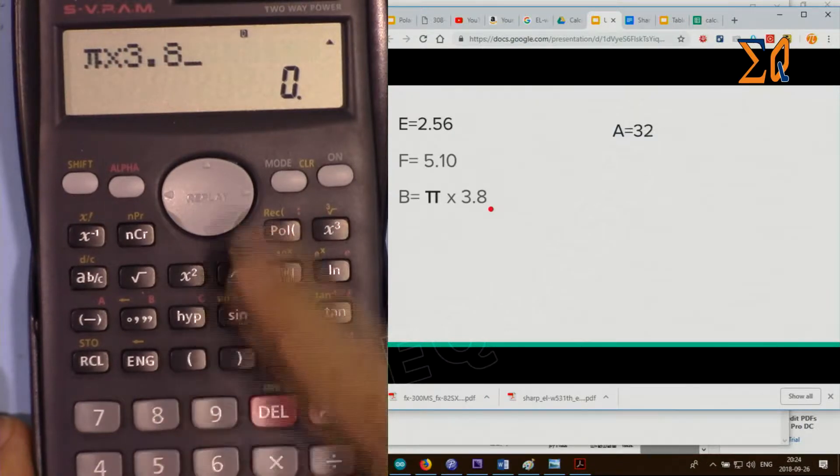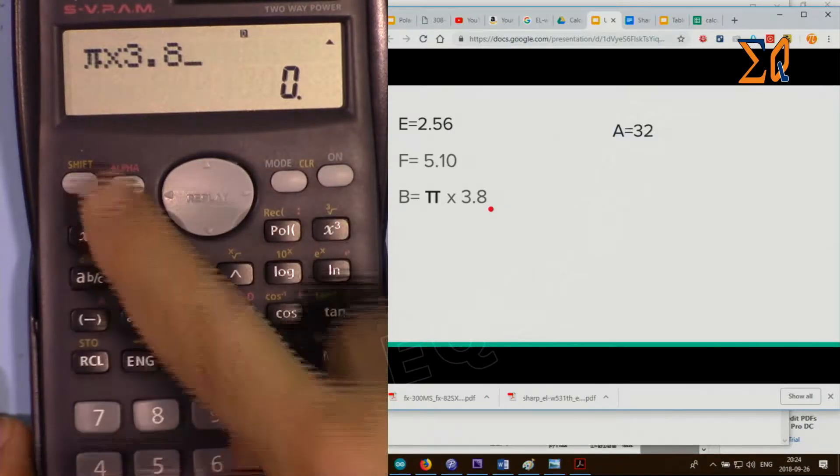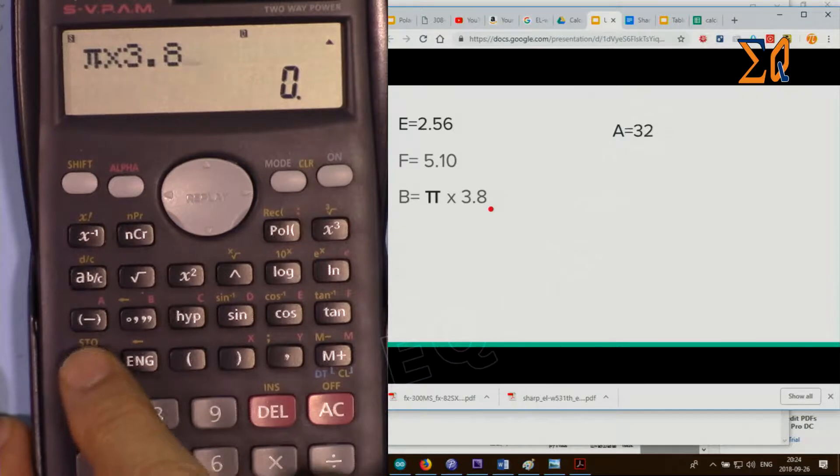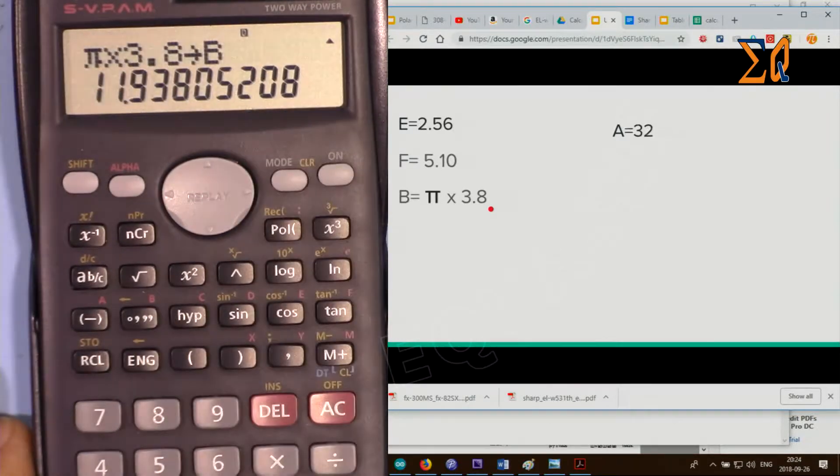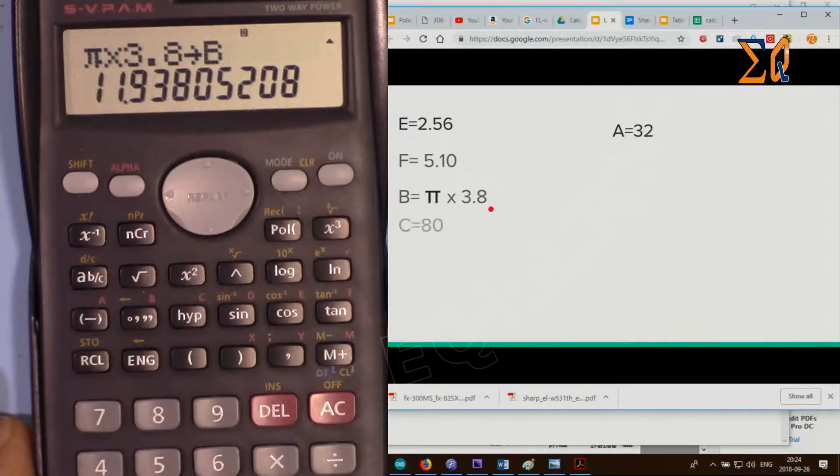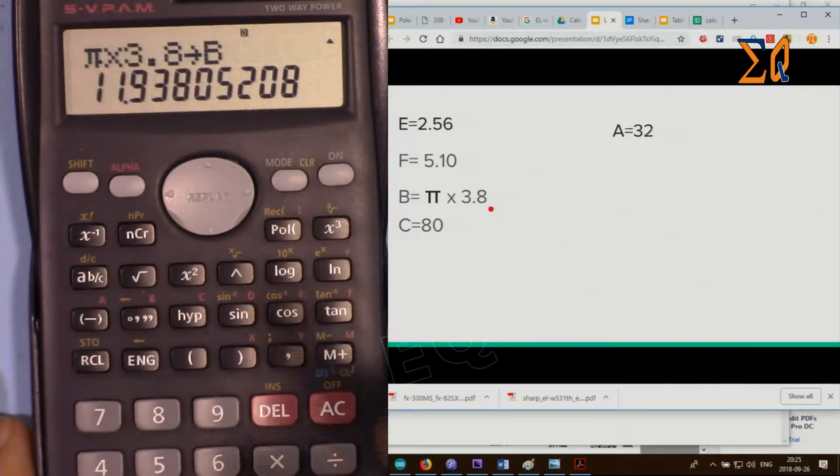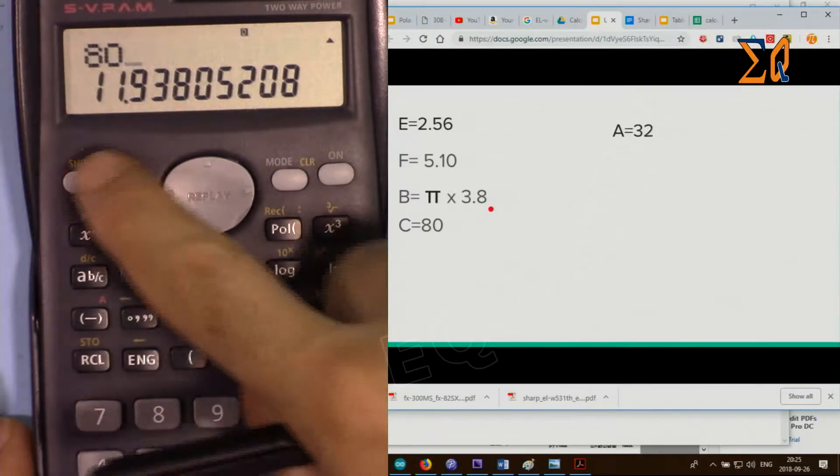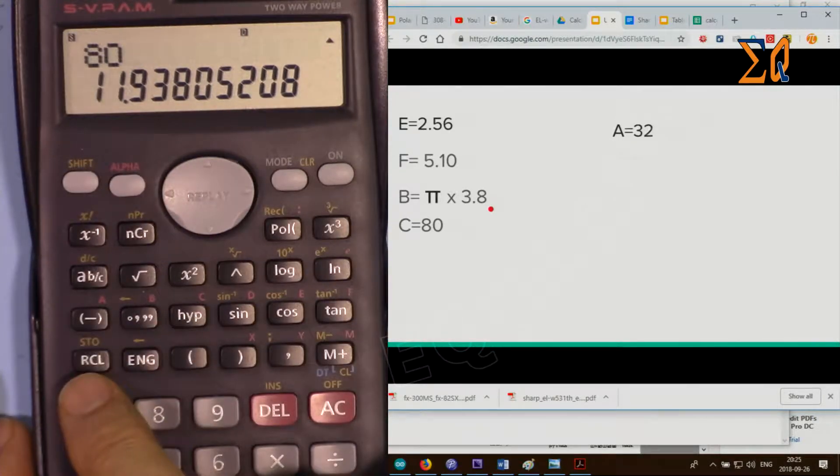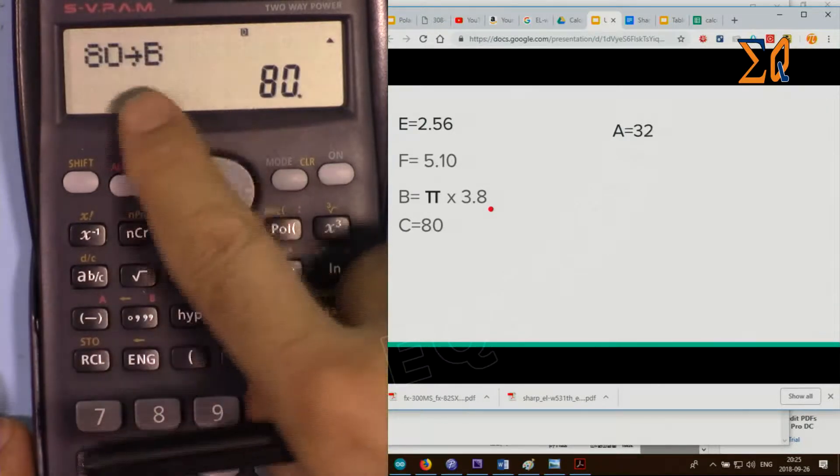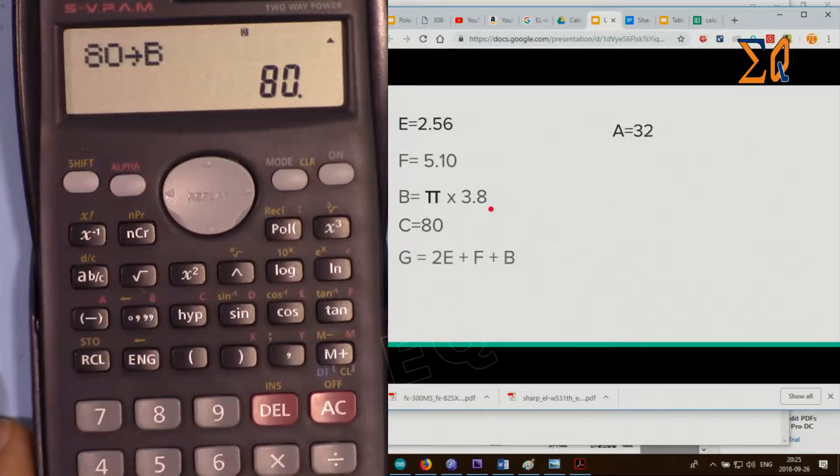Now pi times 3.8. For pi, I'm pressing shift with this button. Clear, shift pi, times 3.8, and the result into B. Second shift store B. Now that is stored in B. I'm going to do a calculation, just hold on.